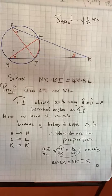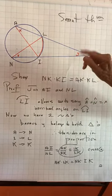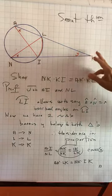The theorem basically says that NK times KI will equal AK times KL.